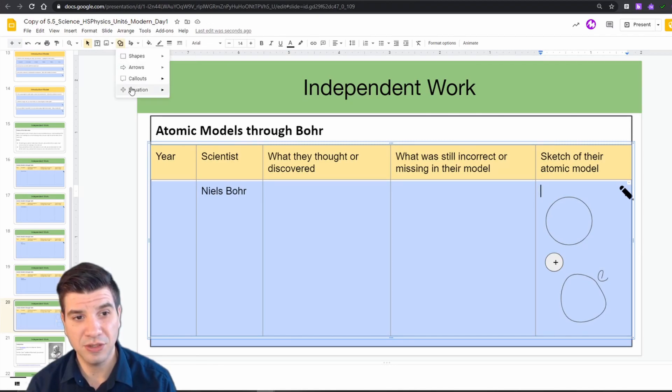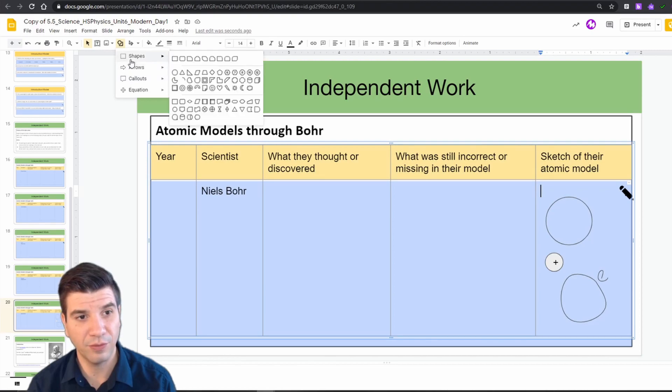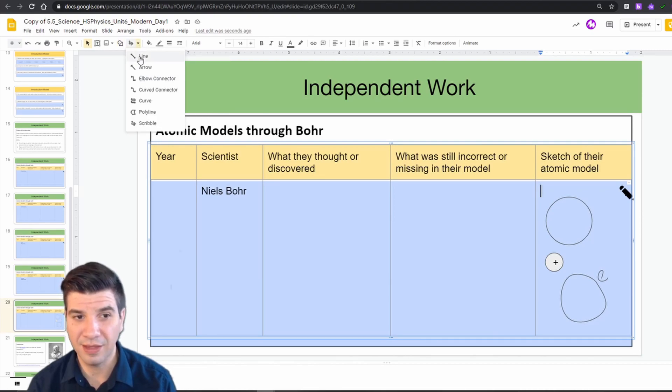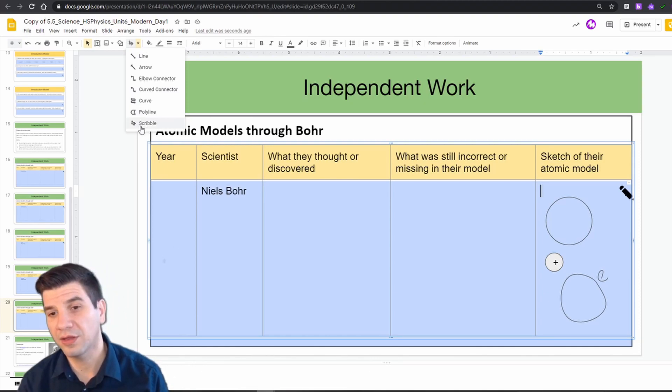So there are many different ways for you to go about doing this. Take a look at the shape options. You have many predefined shapes already in there for you. And you have the line tool, curve tool, scribble tool. Hopefully this makes this task a little bit easier.